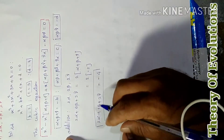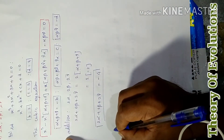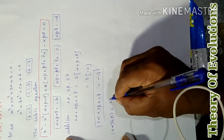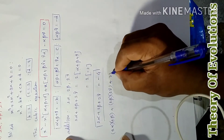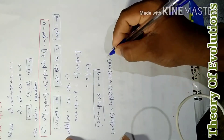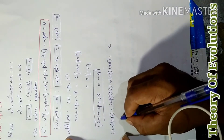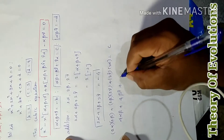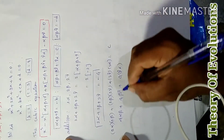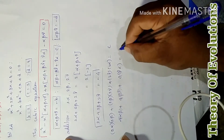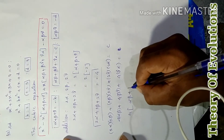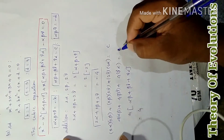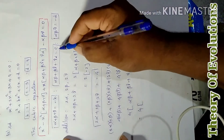The sum of products of pairs of new roots: 2α·2β + 2β·2γ + 2γ·2α = 4(αβ + βγ + γα) = 4 × 3 = 12.